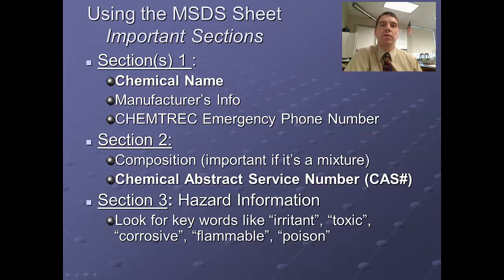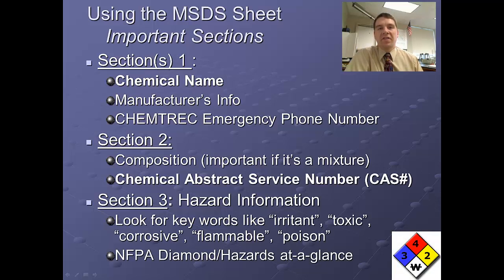Flammable means the substance can be ignited and burn fairly easily. Poison is pretty straightforward — it's similar to toxic in that it causes ill health effects, but generally in a much shorter-term, more acute way. In this same section and perhaps in the firefighting measures section, you may find the NFPA diamond or a numerical scale listing hazards at a glance — a quick snapshot assessment of the hazards presented by a chemical.